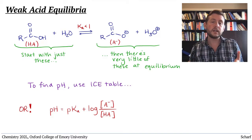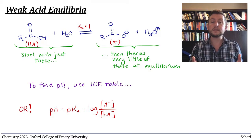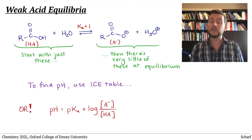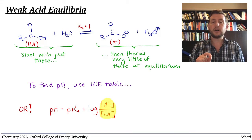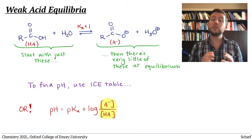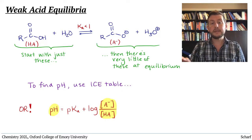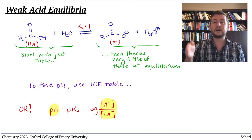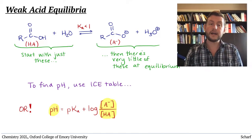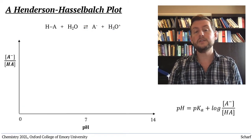This equation actually shows us something that can be very helpful in the lab. The ratio of conjugate base A- to conjugate acid HA has a mathematical relationship with the pH of the solution. A plot of pH on the x-axis versus the conjugate base-to-conjugate acid ratio on the y-axis is called a Henderson-Hasselbalch plot.